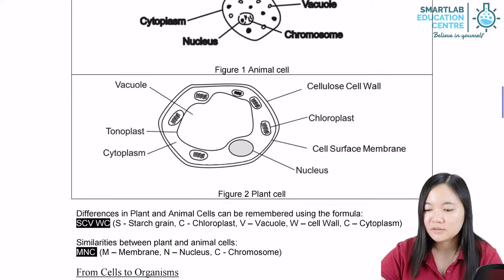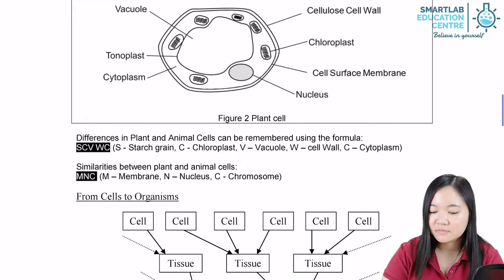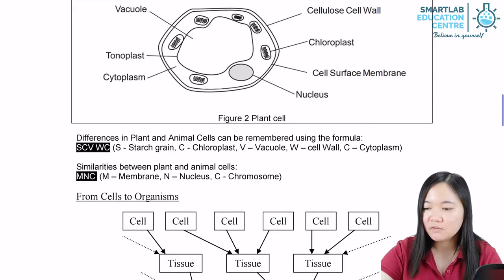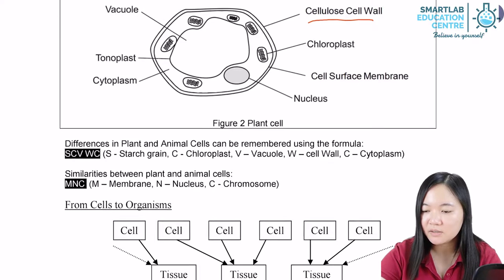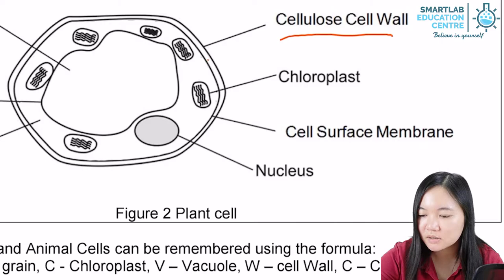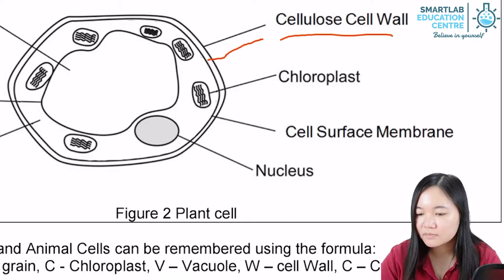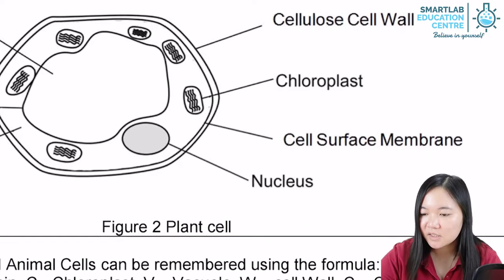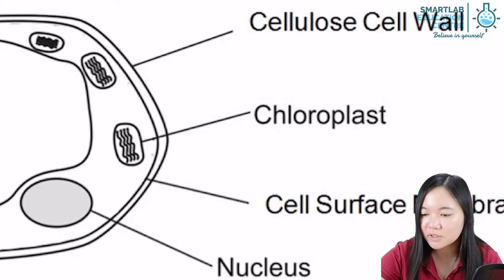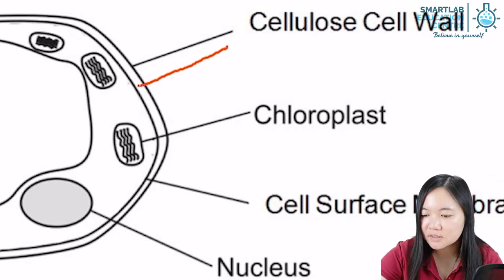We have the plant cell. We start off with the cell wall, which is over here. If the labelling stretches all the way up to here, it is still acceptable. If it stretches all the way up to here, it is still acceptable. If it touches the line, it is no longer cell wall.